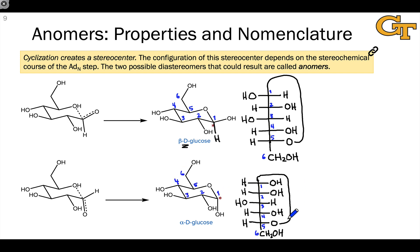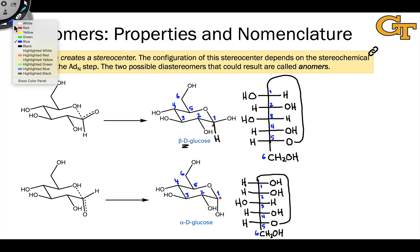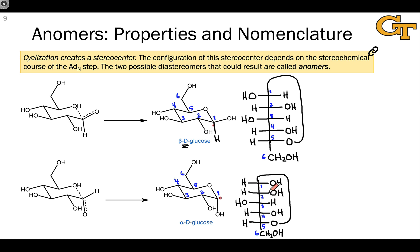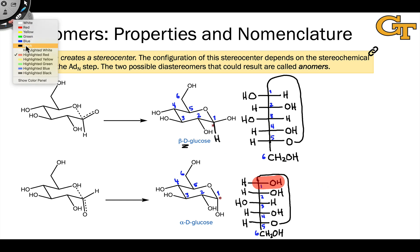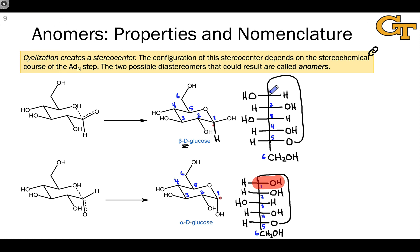The alpha-D-glucose Fischer projection is nearly identical to the beta-D-glucose projection, but let me draw your attention to the key difference. In the alpha-D-glucose projection, the hydroxyl group linked to the anomeric carbon points to the right. However, in the projection for the beta anomer, that hydroxyl group linked to the anomeric carbon points to the left. This is key to the alpha and beta conventions and key to recognizing the difference between anomers in Fischer projection form.